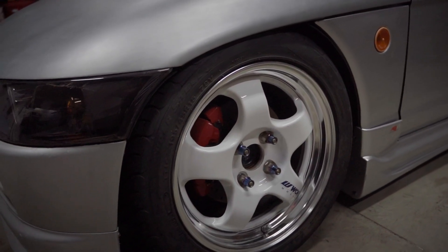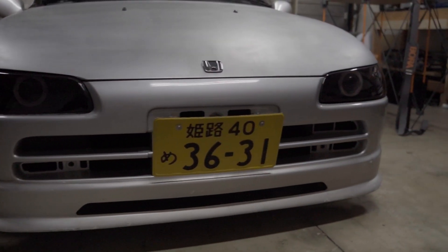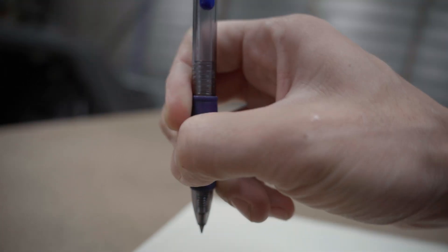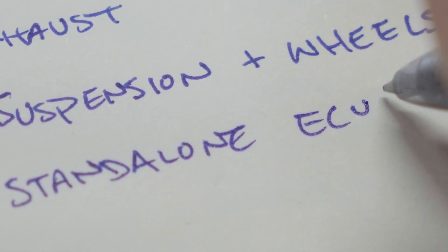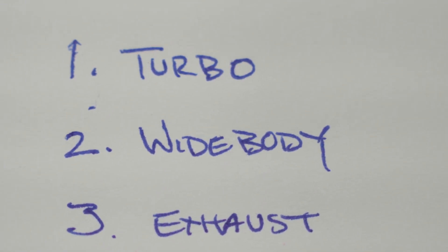I don't know about you, but when I start a new project car, the first thing I do is make a list of all the modifications I want to do. And one thing I had on the top of the list for the Honda Beat is making a custom widebody kit.